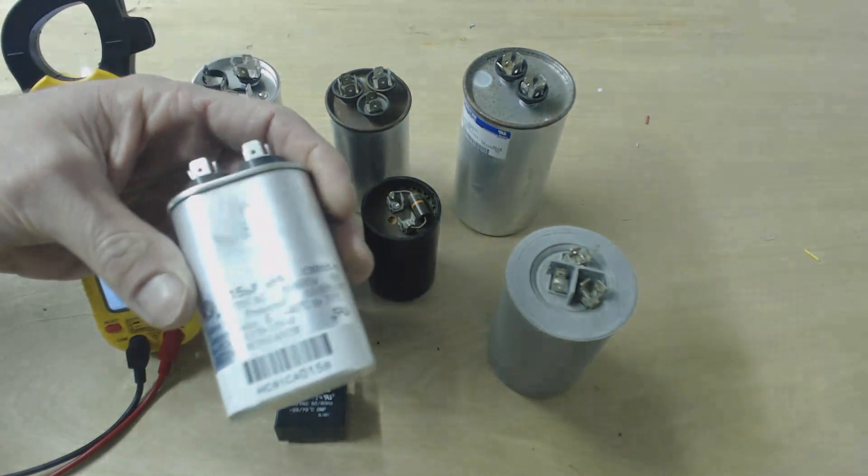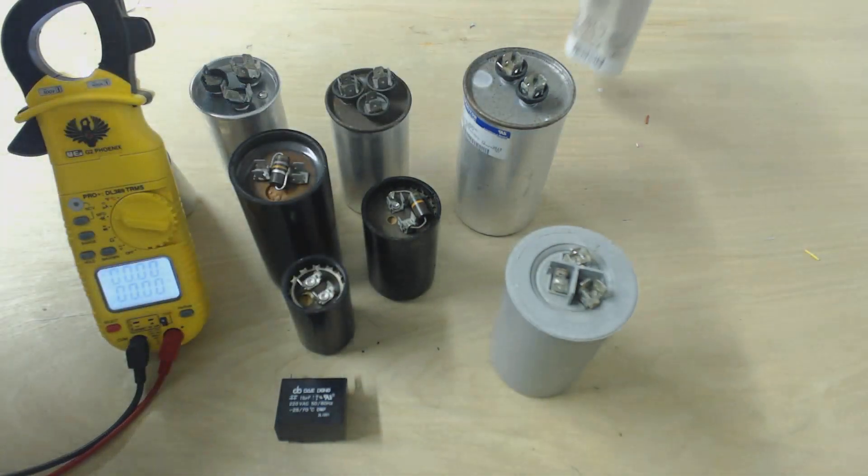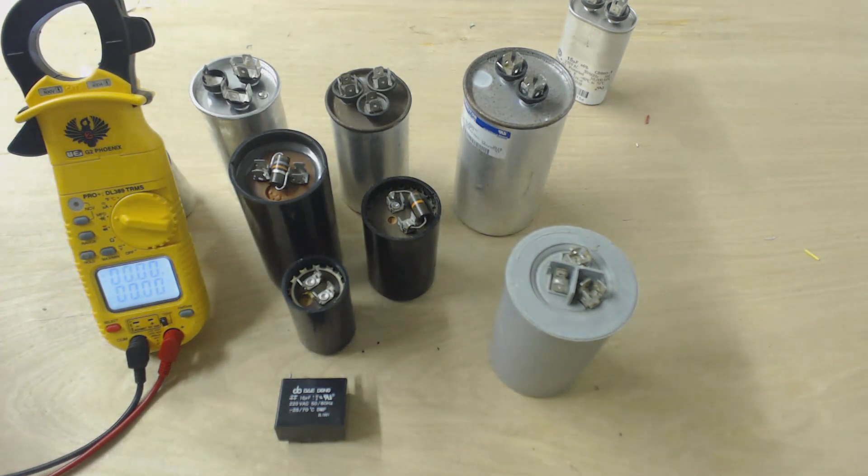So once again, this one would be for maybe a blower motor on an indoor unit, typically. They could be 3 UF, 5 UF, 7.5 UF, 10 UF, 15, whatever.